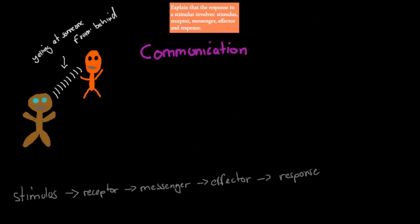Now I'm going to give you a different example related to communication, since the chapter itself is called communication. Communication is a way that we can communicate from one organism to the next. For example, if one person wants to communicate with another person, that's communication between two individuals.